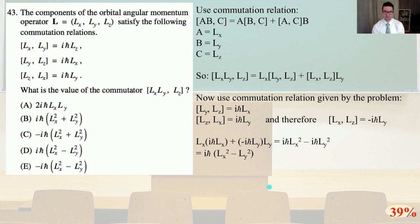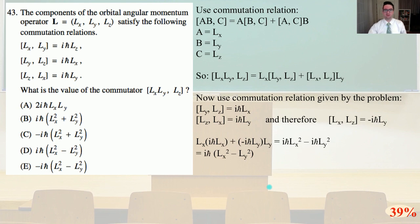So [L_x, [L_y, L_z]] equals L_x times [L_y, L_z] plus [L_x, L_z] times L_y. Using the given commutation relations, [L_y, L_z] = iℏ L_x and [L_z, L_x] = iℏ L_y, therefore [L_x, L_z] = -iℏ L_y. So we get L_x times (iℏ L_x) plus (-iℏ L_y) times L_y, which equals iℏ L_x² minus iℏ L_y², and that simplifies to iℏ(L_x² - L_y²). That is answer D.